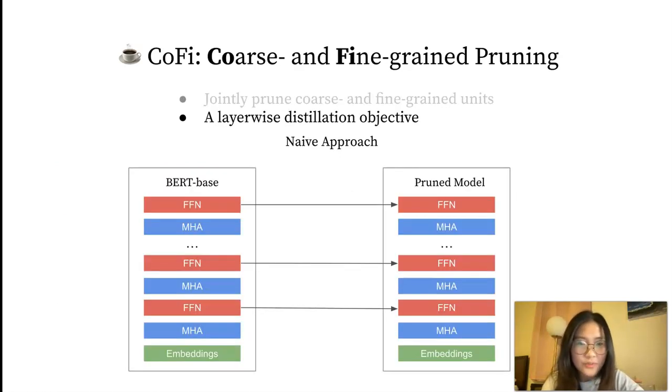For the layer-wise distillation objective, a naive approach would be to align each layer for distillation. When one FFN layer is pruned, we simply remove the distillation loss to that layer. However, such an approach is suboptimal because the loss forces the pruned model to approximate a function that only consists of lower layers.